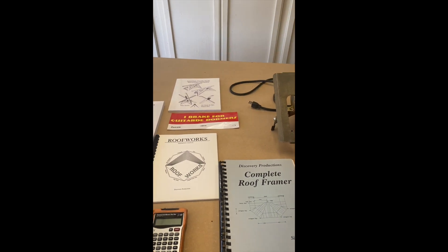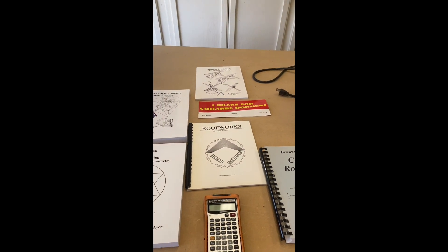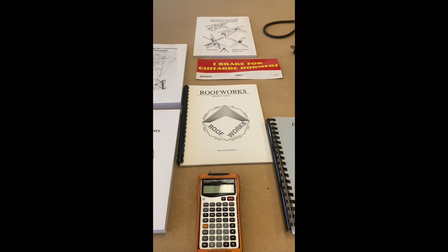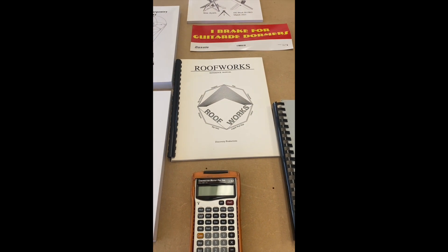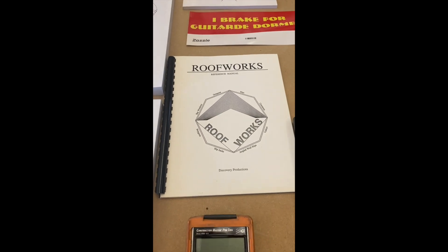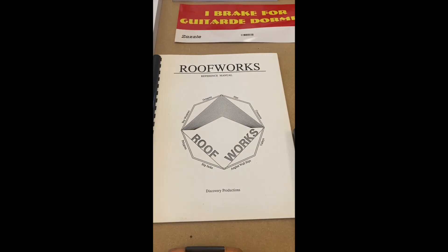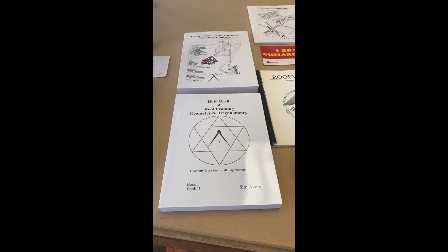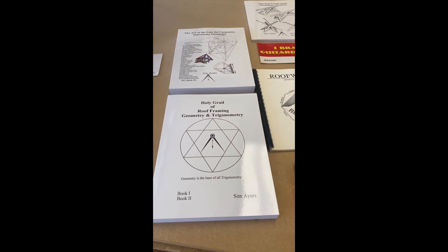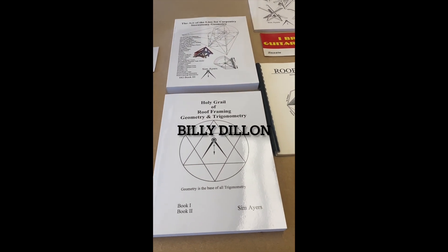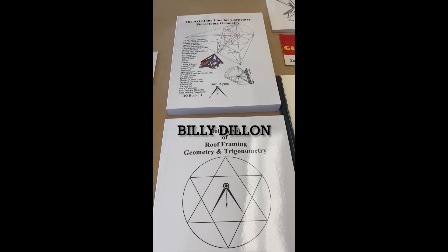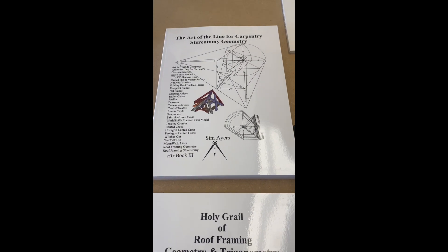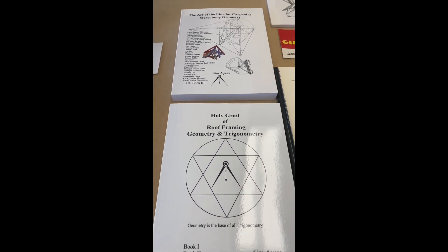No trigonometry or AI were used in creating this task model. I used stereotomy drawings to describe the cuts for the 347 different pieces in this task model. This task model has transformed the intersection of solids into the alchemy of solids. Let's enjoy the journey.